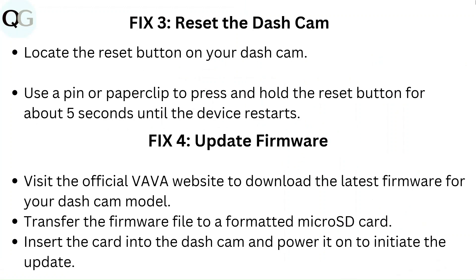Fix 4: Update firmware. Visit the official Wawa website to download the latest firmware for your dashcam model, transfer the firmware file to a formatted microSD card, insert the card into the dashcam and power it on to initiate the update.